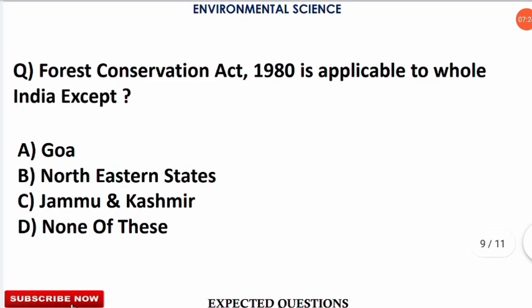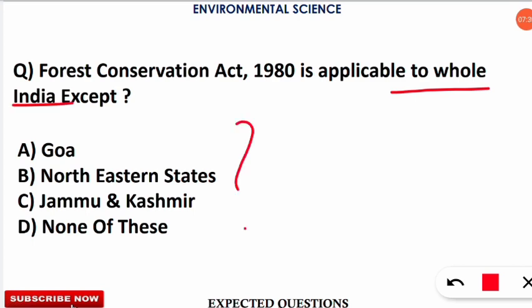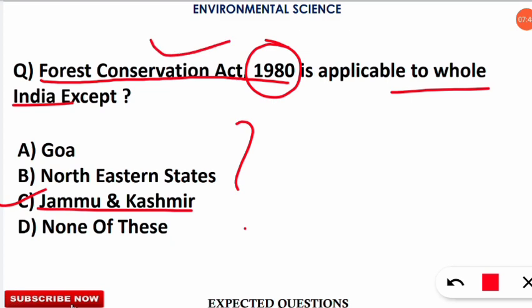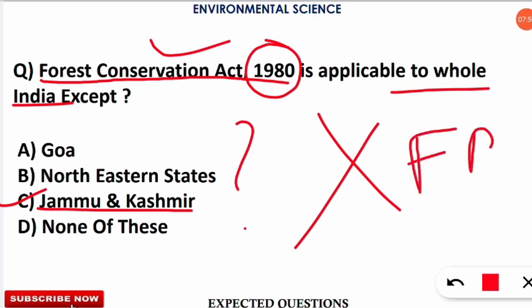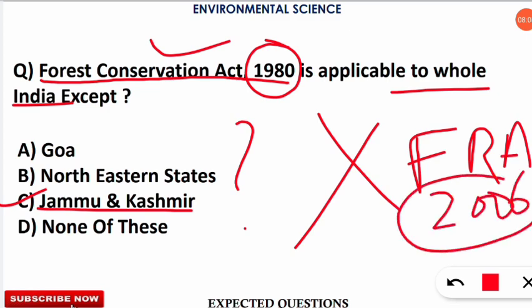The next question is: the Forest Conservation Act of 1980 is applicable to the whole of India except which region? Note that the Forest Conservation Act was enacted in 1980. The correct answer is option C — it is not applicable in Jammu and Kashmir. Additionally, the Forest Rights Act of 2006 is also not applicable to Jammu and Kashmir, but is applicable to all other parts of India.